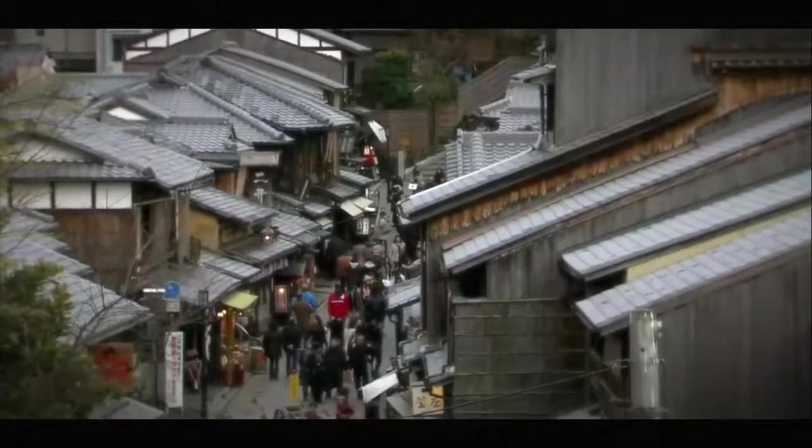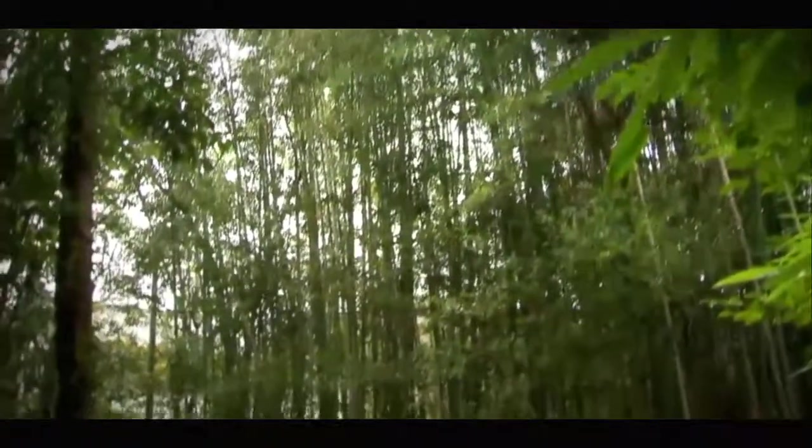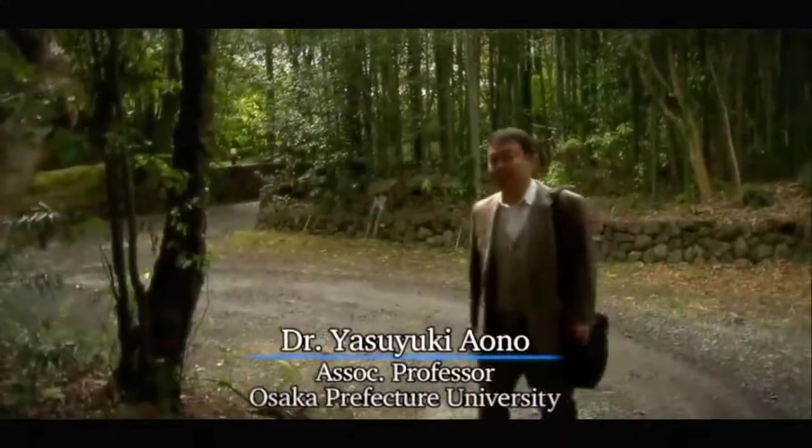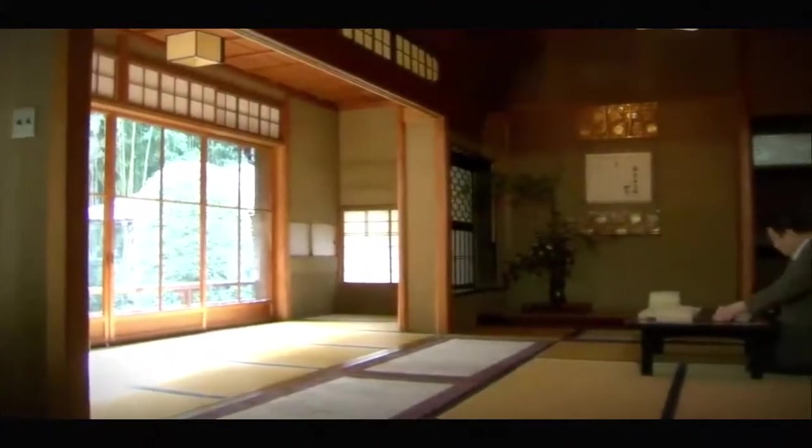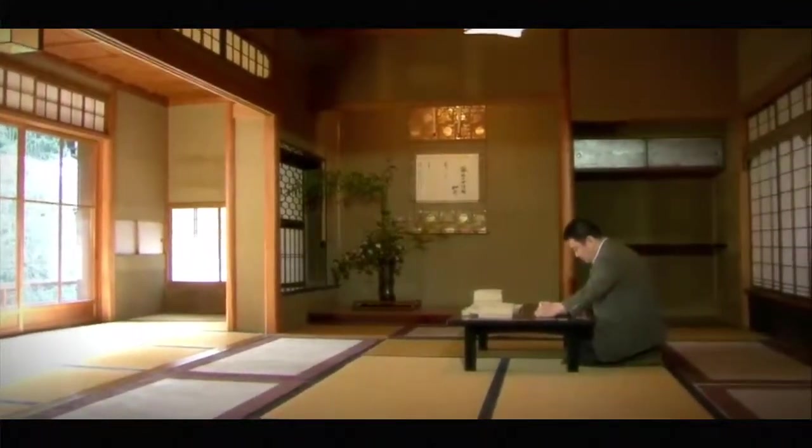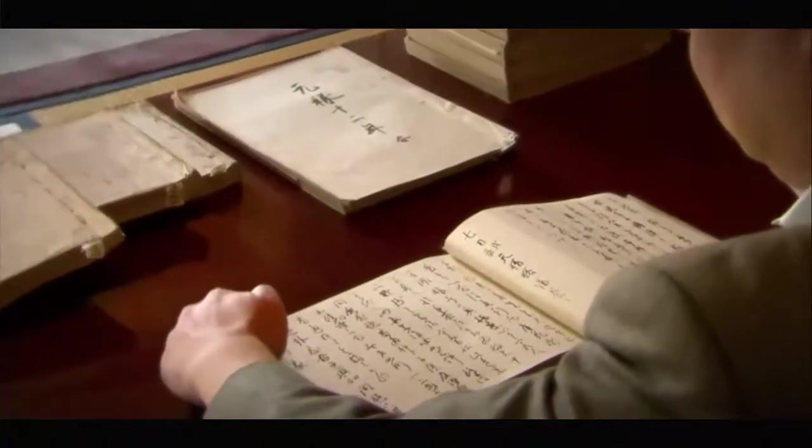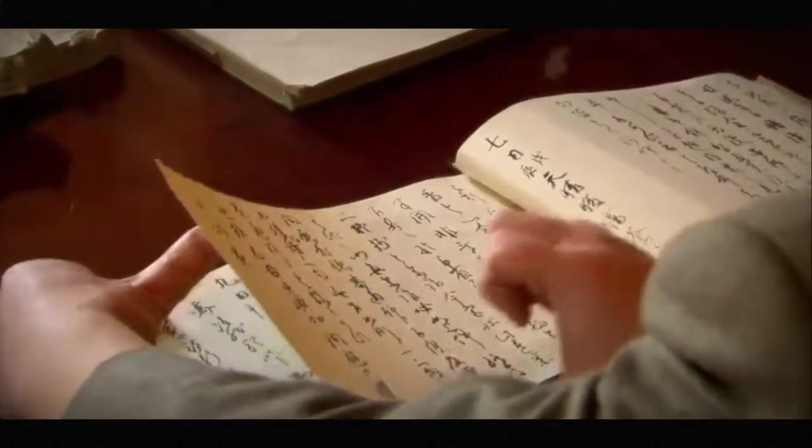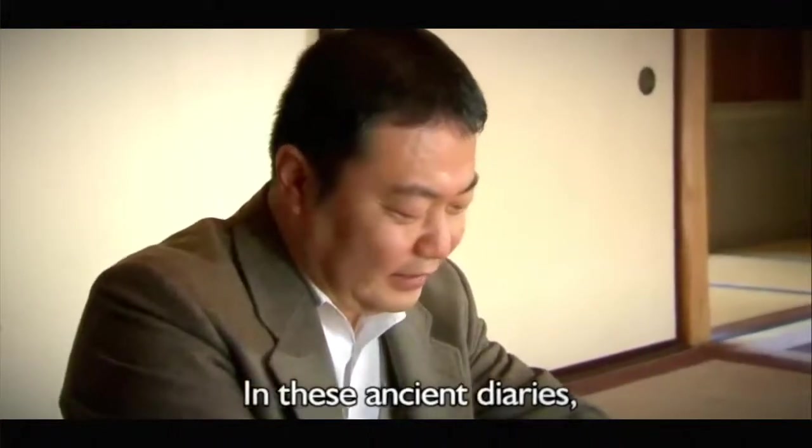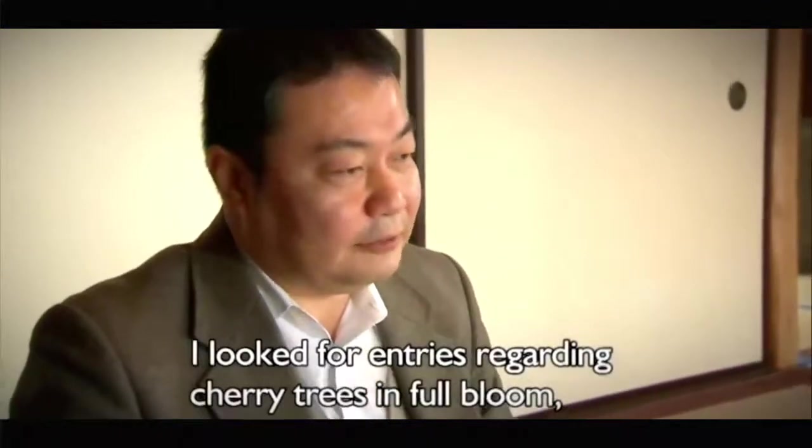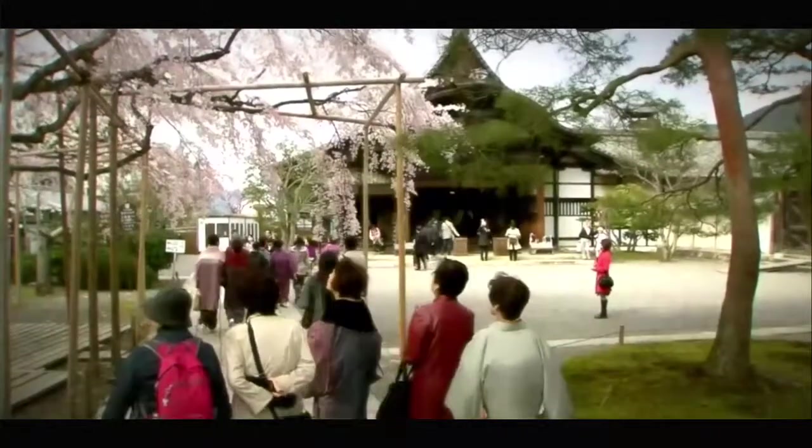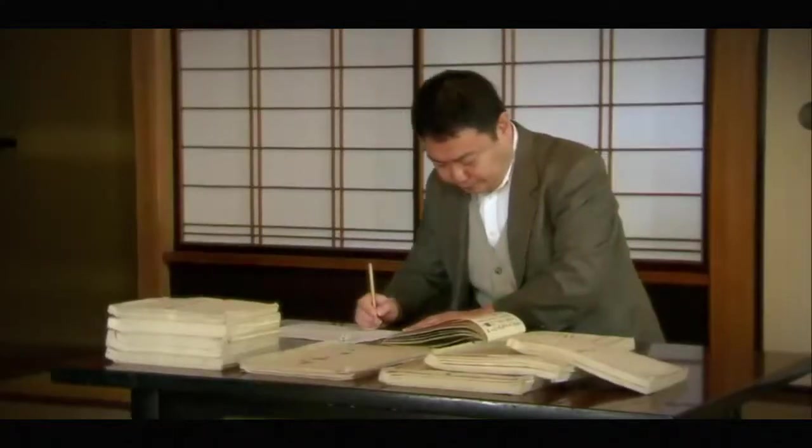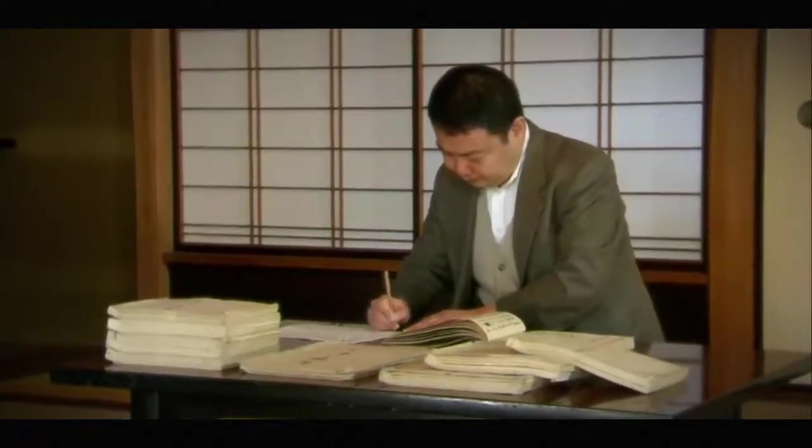This is Kyoto, the ancient capital of Japan. Dr. Yasuyuki Aono is an associate professor at Osaka Prefecture University. He has come to the Yomei Bunko Library. It is here that he read some ancient texts, passed down through the Konoe family of court nobility. The timing of when cherry trees bloom is determined by the temperatures at the start of spring. With this in mind, Aono looked for diary entries that would provide clues to the temperatures at the time.